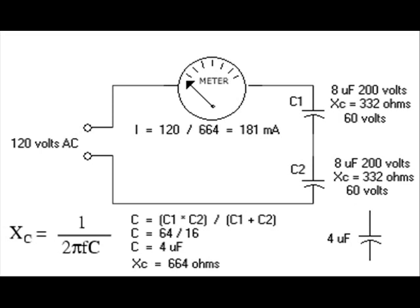As you can see by the formula under the drawing, capacitance equals C1 times C2 divided by C1 plus C2, or 64 divided by 16 which equals 4 microfarads. If you use a C of 4 microfarads and use the capacitive reactance formula, XC equals 1 over 2πFC and you use 4 microfarads, you will come back to 664 ohms.